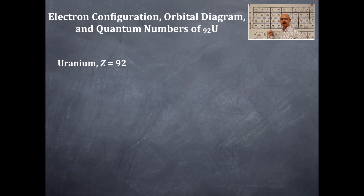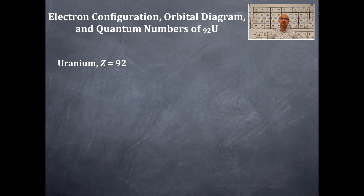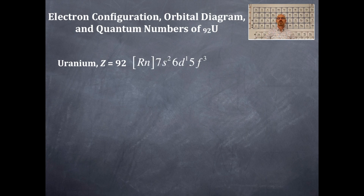Uranium-92 is the heaviest element that is naturally occurring in the universe. Everything past Uranium — past Z of 92, that is Z of 93, Neptunium, and above, Plutonium, etc. — all those are man-made. So we're going to do the electron configuration for Uranium using the noble gas notation, so make sure you've got the right noble gas.